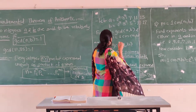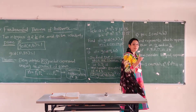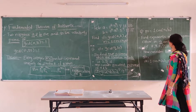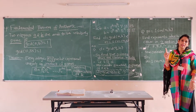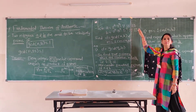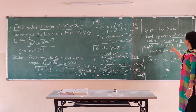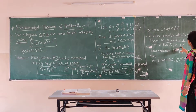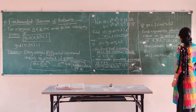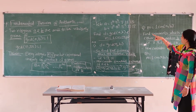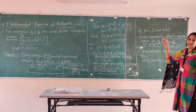Next we find LCM(a, b). For LCM, we find the exponents which appear in either a or b — meaning we consider all primes that are part of a or b. The primes present across a and b are: 2, 3, 5, 7, 11, 13, and 17.